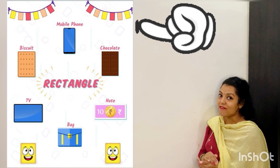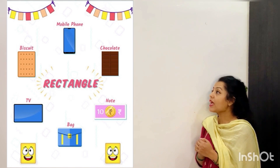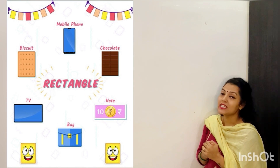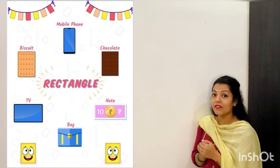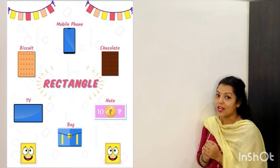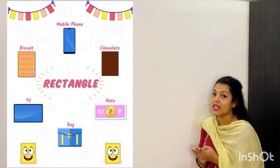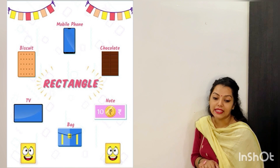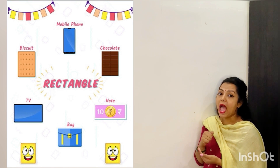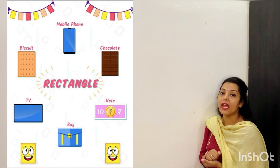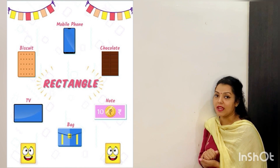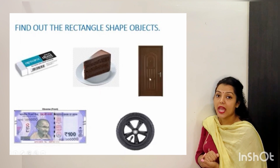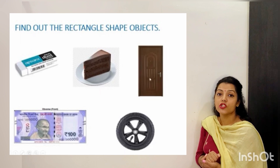We have mobile phone — your favourite! Then we have chocolate — again your favourite. Biscuit. Then we have TV. You watch your favourite cartoon in this TV and this TV is rectangle in shape. Then we have a note, and then we have a bag. These all shapes are rectangle shape. Now here are some shapes given. Can you guess out of these which are rectangle shape?